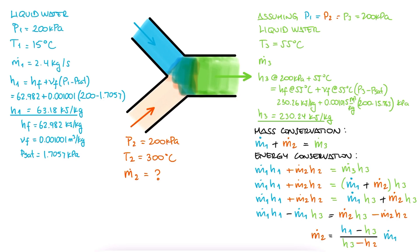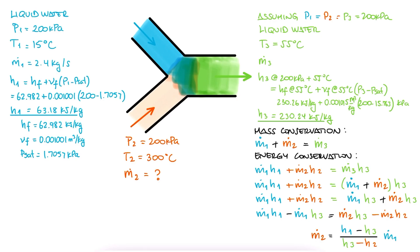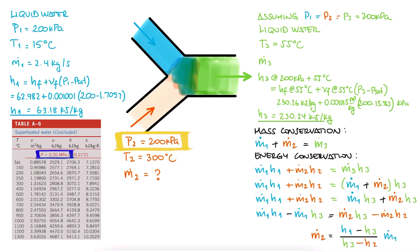As for h2, since we have vapor, we go to our superheated tables for water, specifically for 200 kilopascals, and look up a temperature of 300 degrees Celsius to write down the enthalpy value.